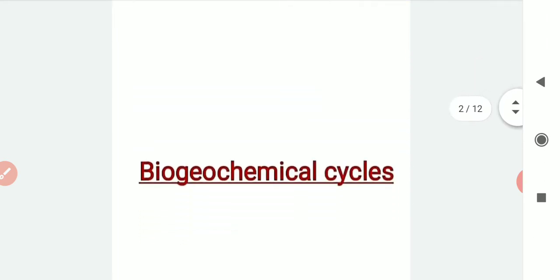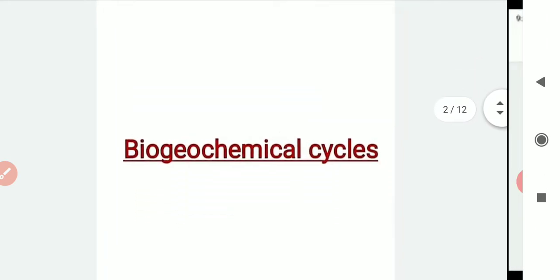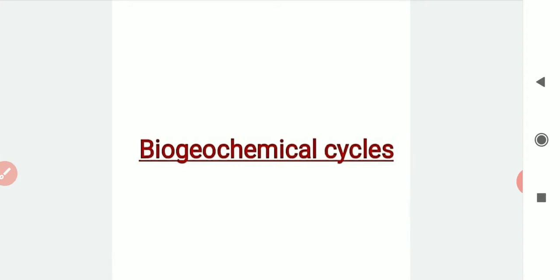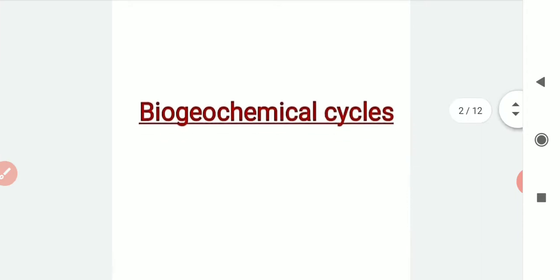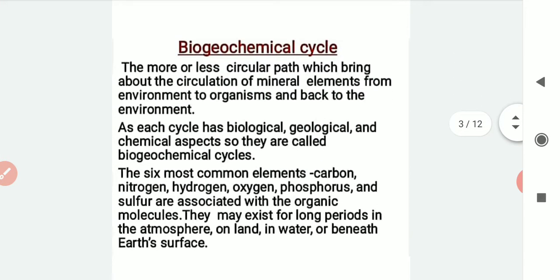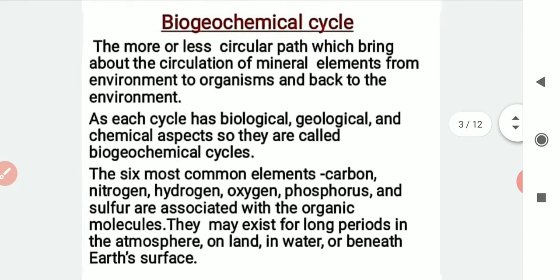Today I will discuss regarding the biogeochemical cycles. Biogeochemical cycles — it is the more or less circular path which brings about the circulation of mineral elements from environment to organism and back to the environment. This means that a cycle starts where it begins and ends.